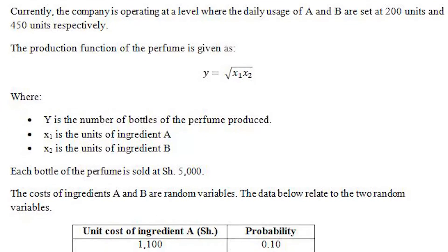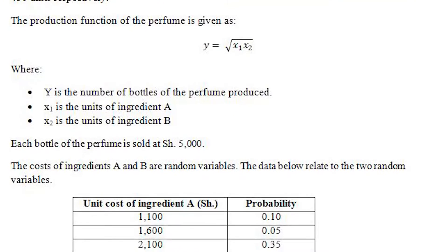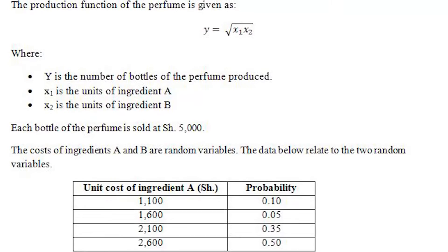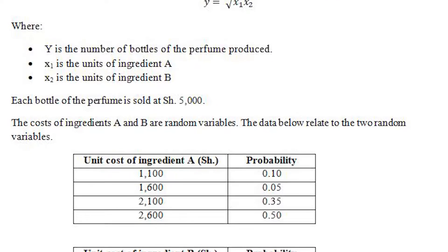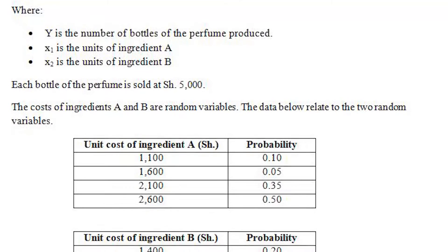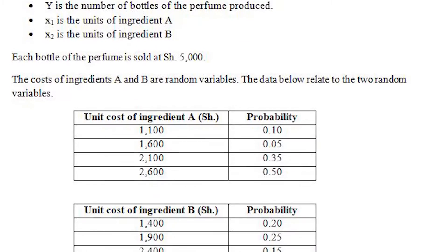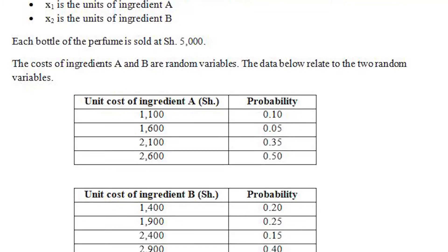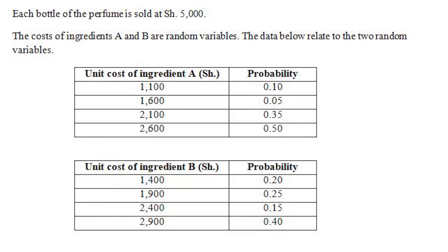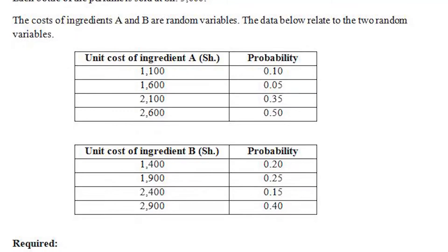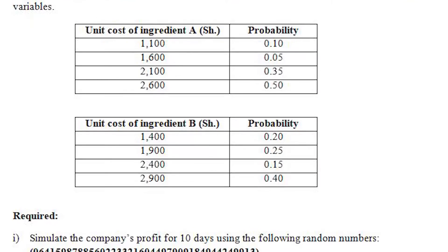Each bottle of the perfume is sold at shillings 5,000. The costs of ingredients A and B are random variables. The data below relates to the two random variables. Unit cost of ingredient A in shillings and probability: 1100 probability 0.1, 1600 probability 0.05, 2100 probability 0.35, 2600 probability 0.5. Unit cost of ingredient B in shillings and probability: 1400 probability 0.2, 1900 probability 0.25, 2400 probability 0.15, 2900 probability 0.4.